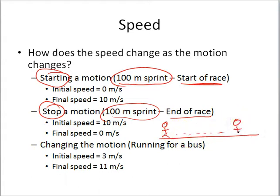and at the end, once he finishes, there's a finishing line, he stops there. His speed actually changes from ten all the way to zero. So, this is stopping a motion. The speed will change to a zero.